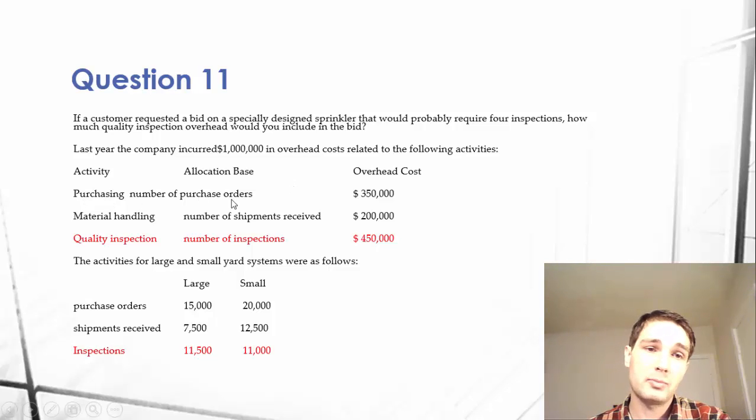We don't need to know the purchasing department or material handling. We don't need to know the total overhead costs. So we can remove all this information. There are a lot of problems in accounting that give you so much information, and you only need to find and use a little bit. That's part of the process—look at a lot of information, determine what you need, analyze it, and spit back what someone wants.